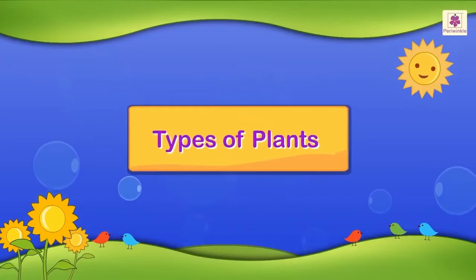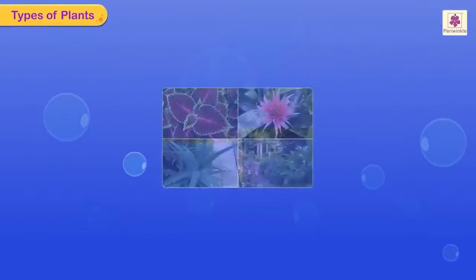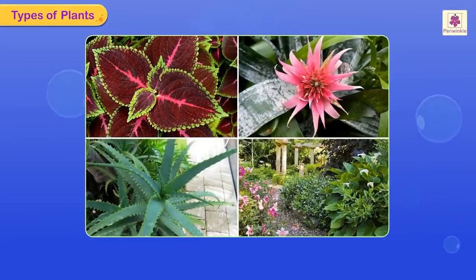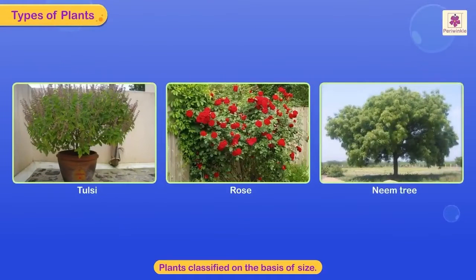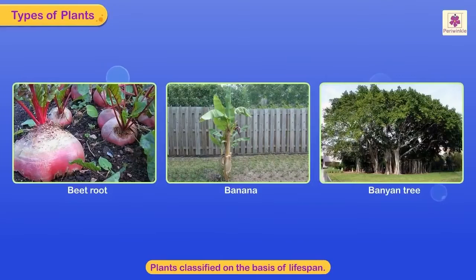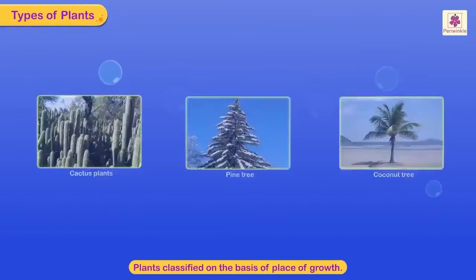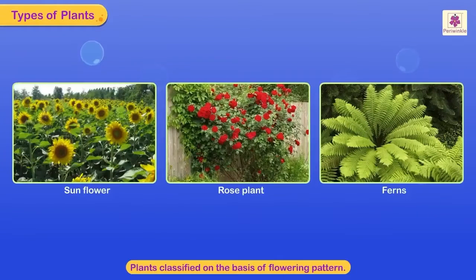Types of Plants. These are different kinds of plants. Plants are classified on the basis of size, life span, place of growth, and flowering pattern.